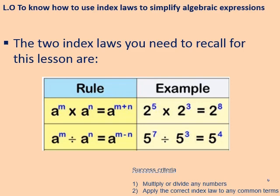Likewise, when you divide two base numbers raised to powers, instead of adding, this time you subtract. An example is five to the power of seven divided by five to the power of three equals five to the power of seven minus three, which gives four. Please pause the video here, copy down both these rules, and refer back to them later in the lesson when you need them.